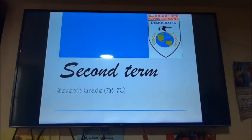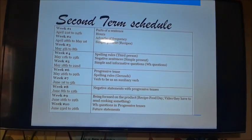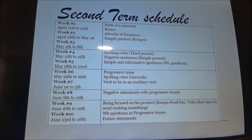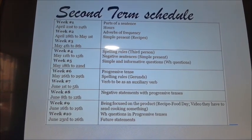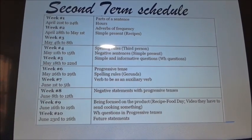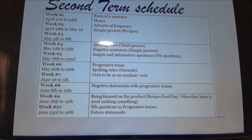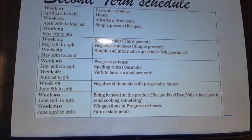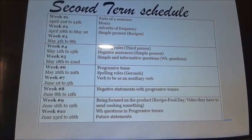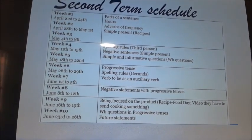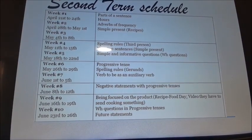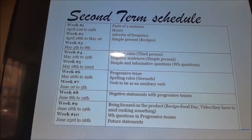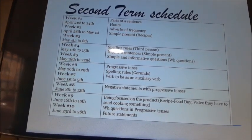So now we have to start with the second term schedule. Week number one, from April 21st to April 24th — that is this week — we have to speak about the parts of a sentence and the hours. The second and third week we have to work on simple present. Then on week number four and five we have to speak about spelling rules for third person, negative sentences, and informative questions like WH questions.